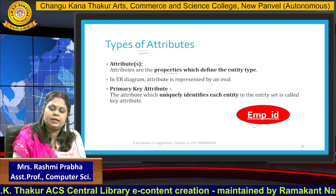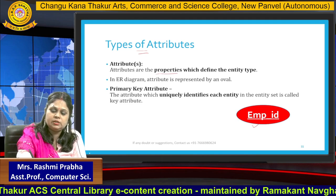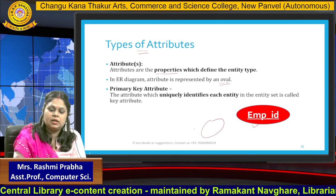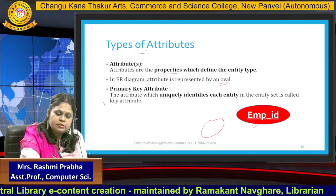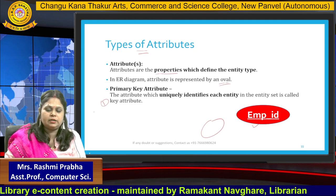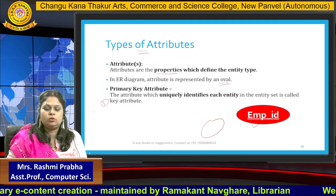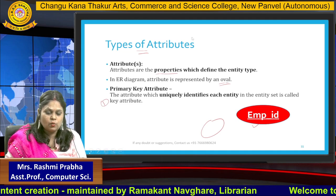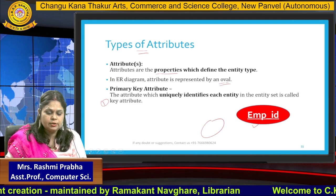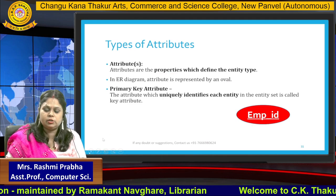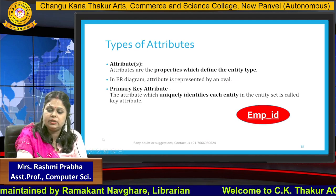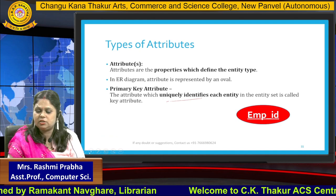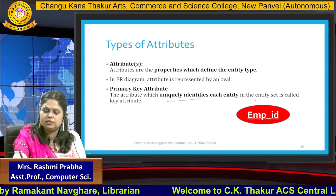In the ER diagram, an attribute is represented by an oval shape. The first important attribute is the primary key attribute. Primary key attribute is used to uniquely identify each and every entity in the entity set.